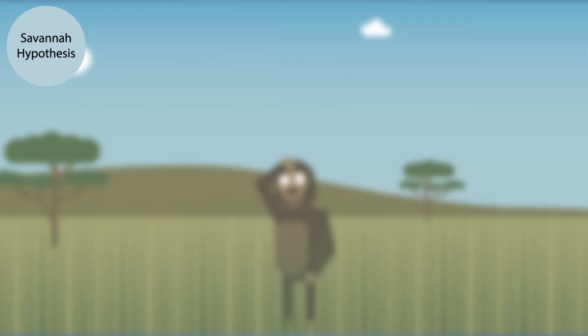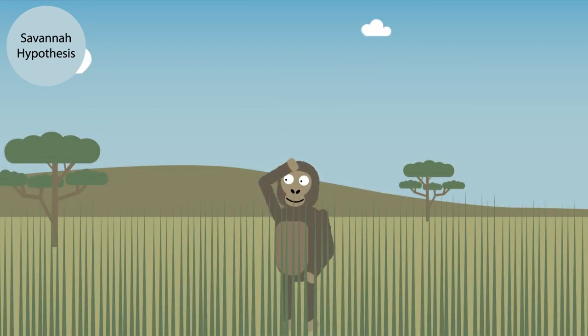Also, early hominids such as the famous Australopithecus fossil known as Lucy would have been much shorter than we are today, so looking for predators in the tall grasses would have proven quite difficult.